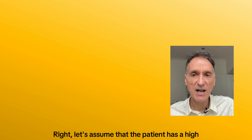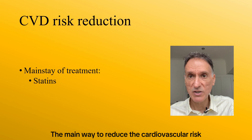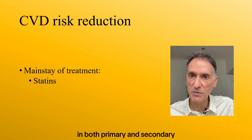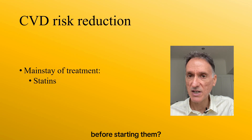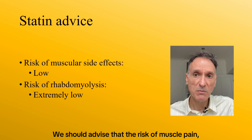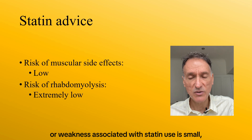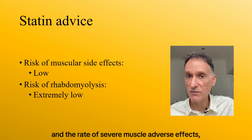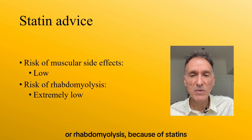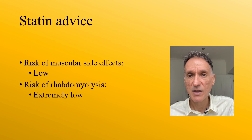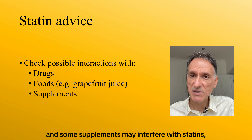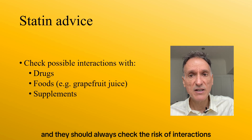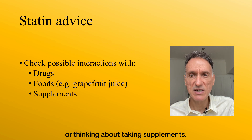Let's assume the patient has a high cardiovascular risk. The main way to reduce cardiovascular risk in both primary and secondary prevention is with statins. What general information should we give to patients before starting them? We should advise that the risk of muscle pain, tenderness or weakness associated with statin use is small and the rate of severe muscle adverse effects or rhabdomyolysis is extremely low. We should also advise that other drugs, some foods such as grapefruit juice, and some supplements may interfere with statins, and patients should always check the risk of interactions when starting other drugs or considering supplements.